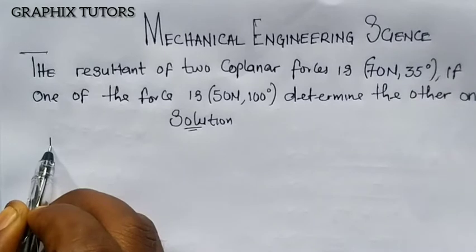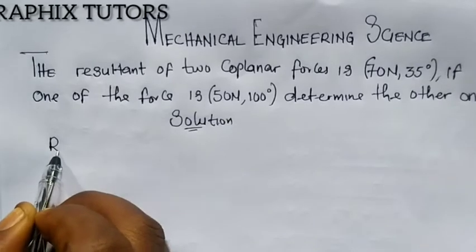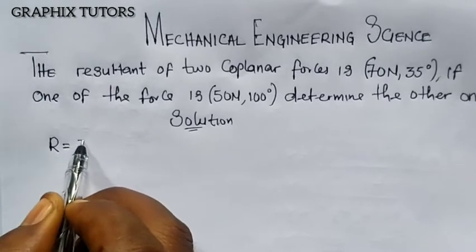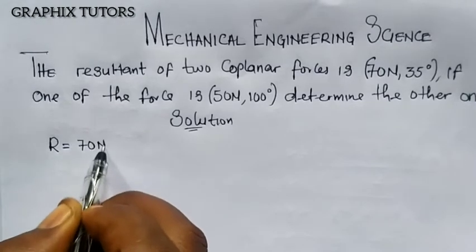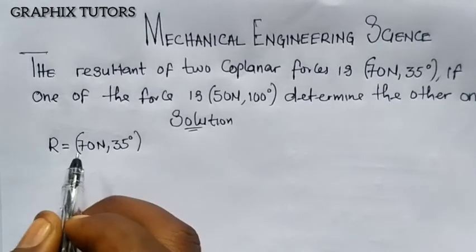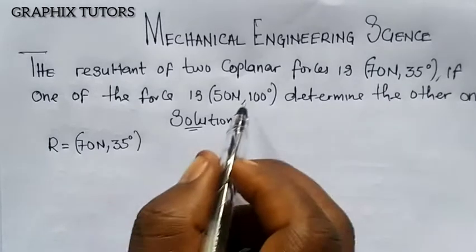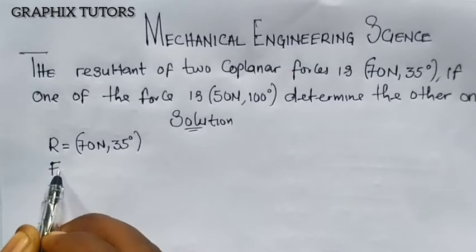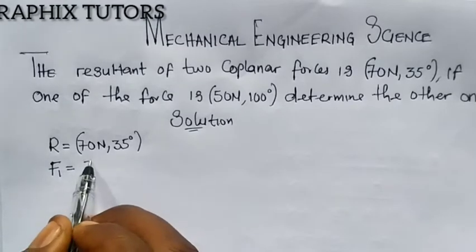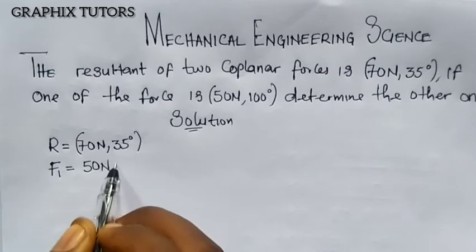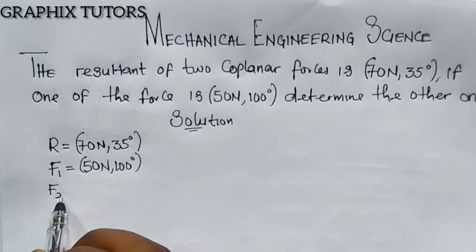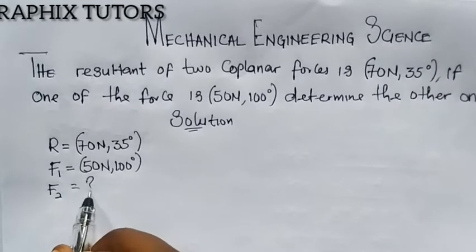We are told that the resultant force R equals 70 newton at 35 degrees. The other force, let's call it F1, equals 50 newton at 100 degrees. But we don't know what F2 is.